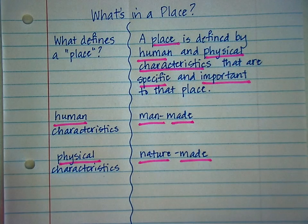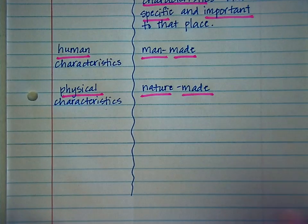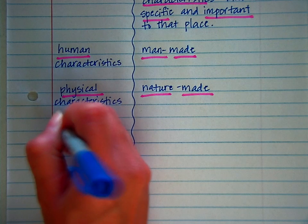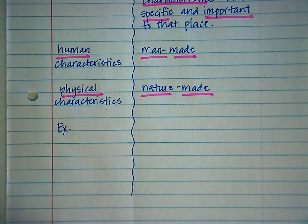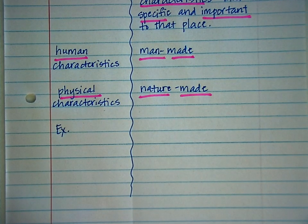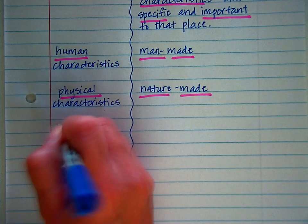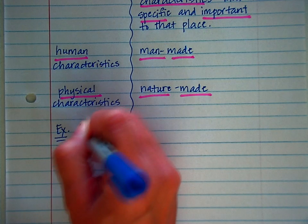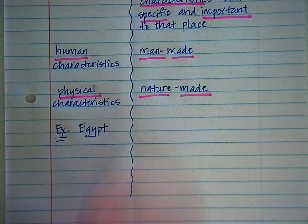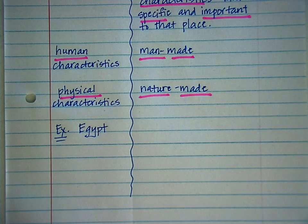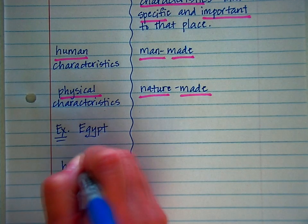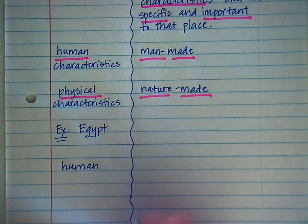So this is a very simple definition of what place is. And then we're going to start off by looking at what are some examples of a place. So we'll take an area that you most likely studied in sixth grade, Egypt. So I'm going to go ahead and write, and so are you, human characteristics, or just the word human on the left hand side.